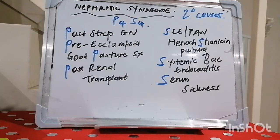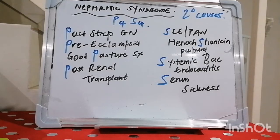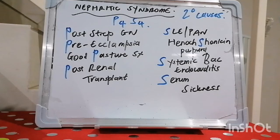We divide this in terms of whether it's focal, diffuse, segmental, or global. Focal means less than 50% of the glomeruli are involved. Diffuse means more than 50% of the glomeruli are involved. Segmental means it's just a segment of the glomerulus, and global means the entire glomerulus.